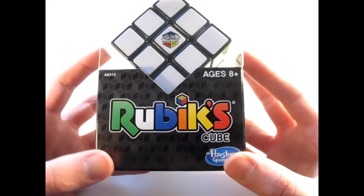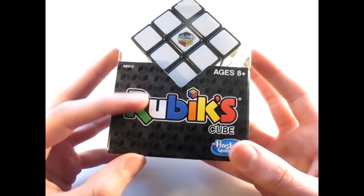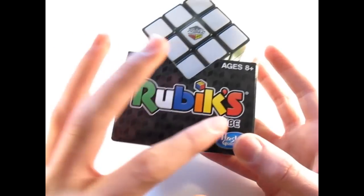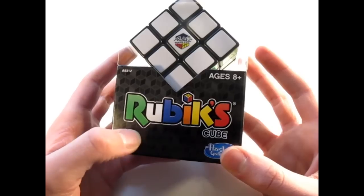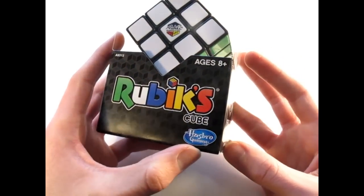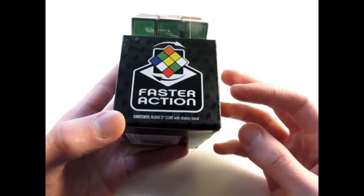I've got to hand it to Rubik's Cube. They have a really nice looking box. The nice gray background with the cubes in it, and here's the Rubik's Cube logo. It has the Rubik's color scheme on it. It's Hasbro Gaming. Faster action, it says.